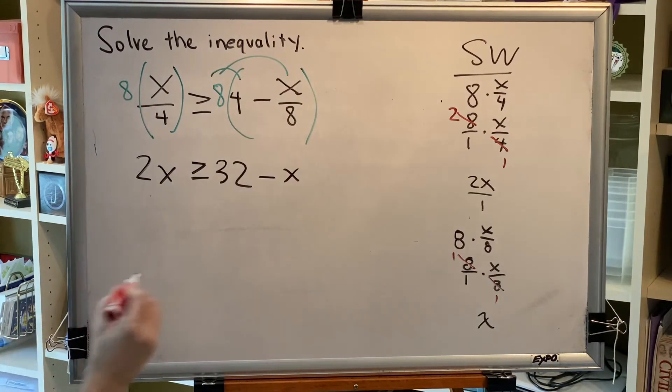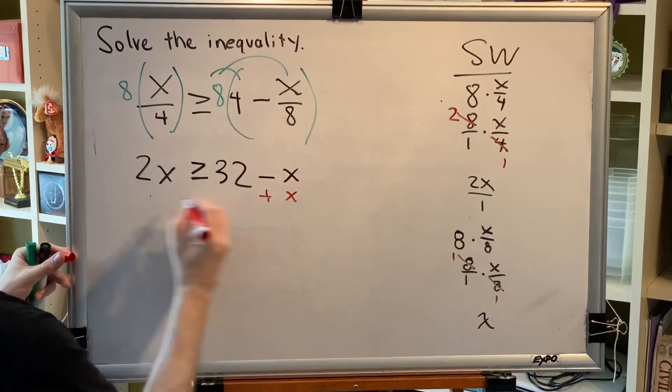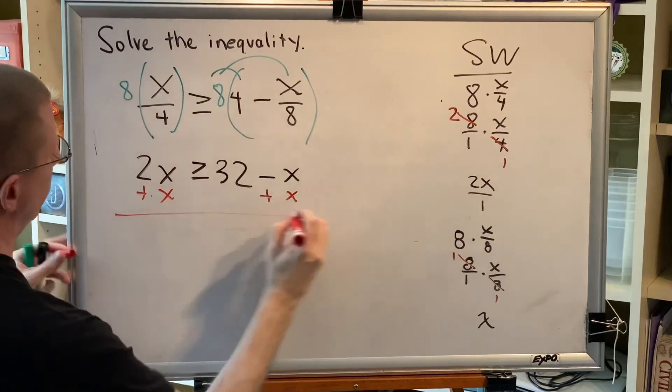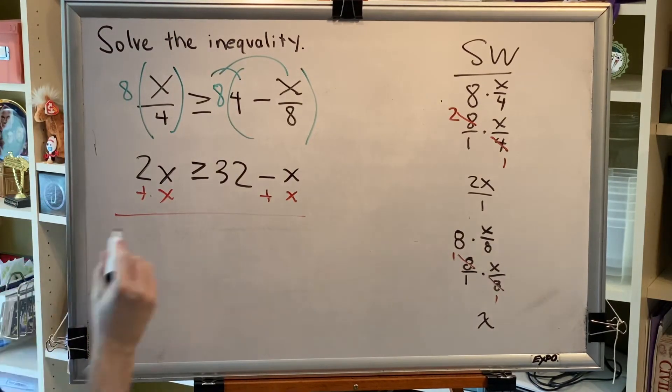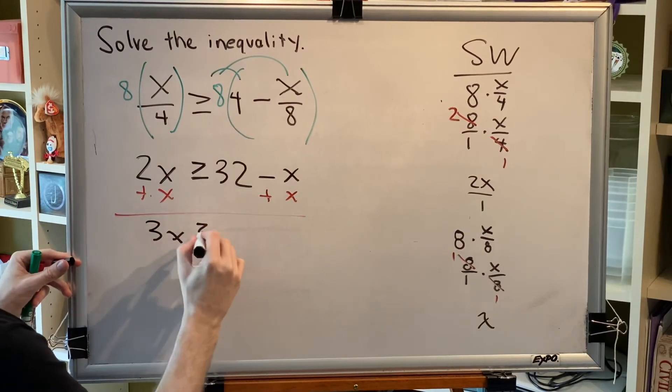Now collect all variable terms on one side. Plus x, plus x. And we get 3x greater than or equal to 32.